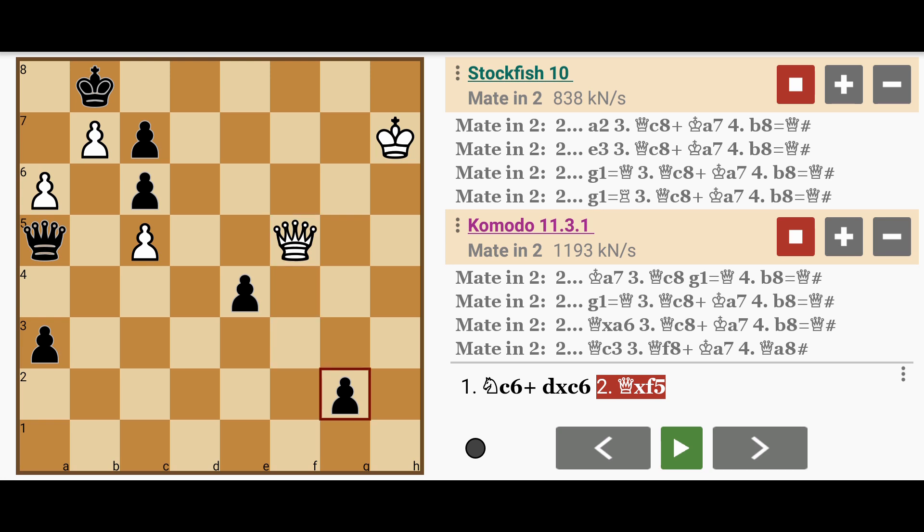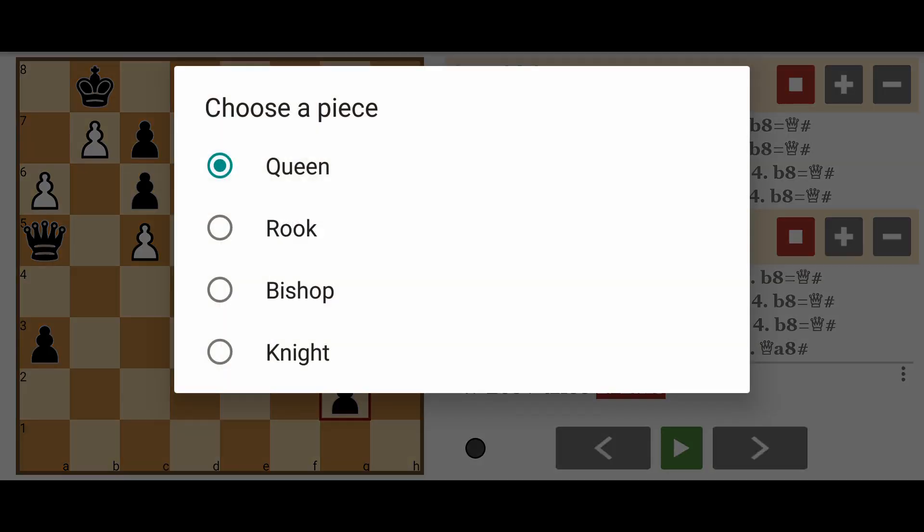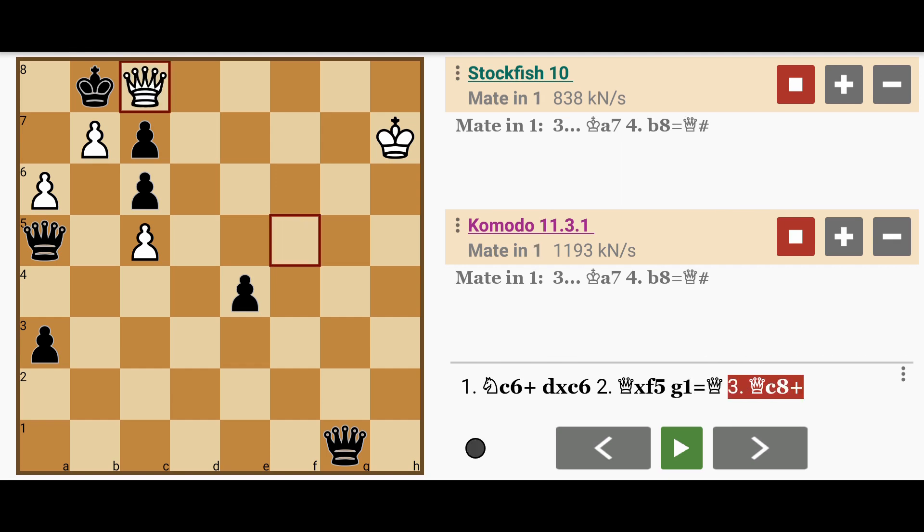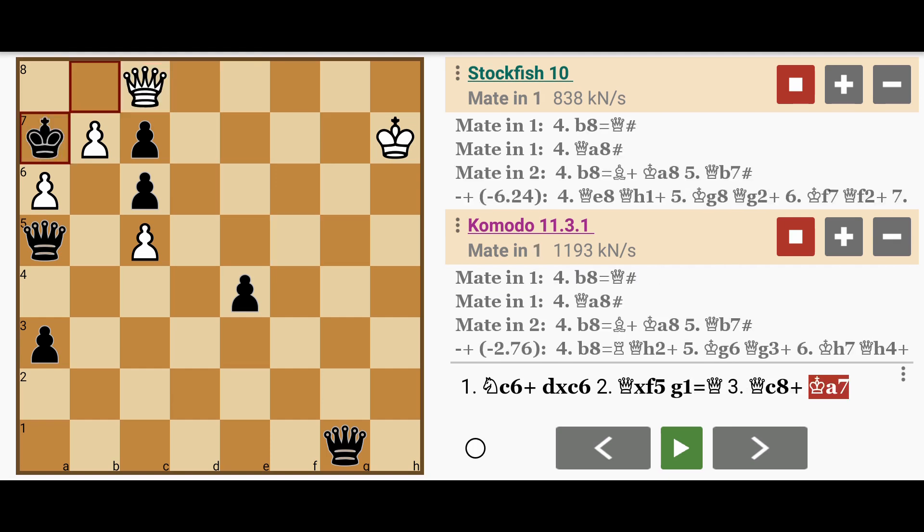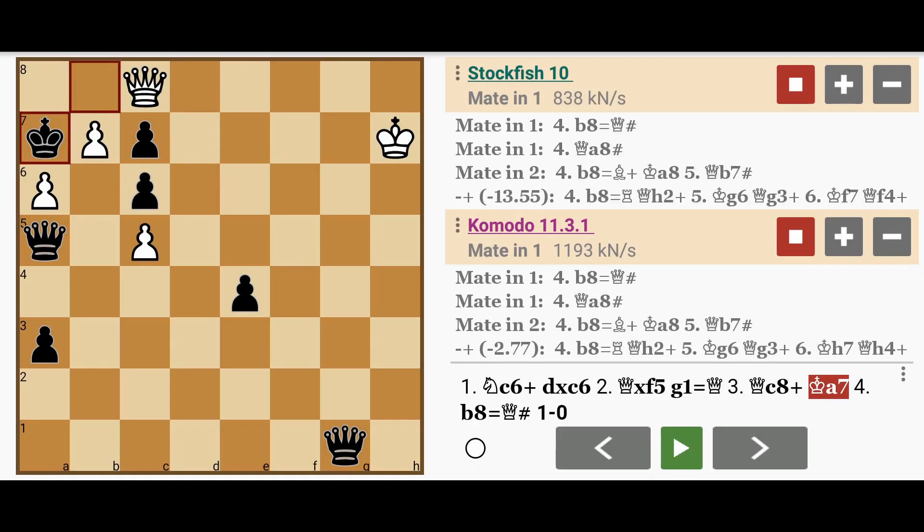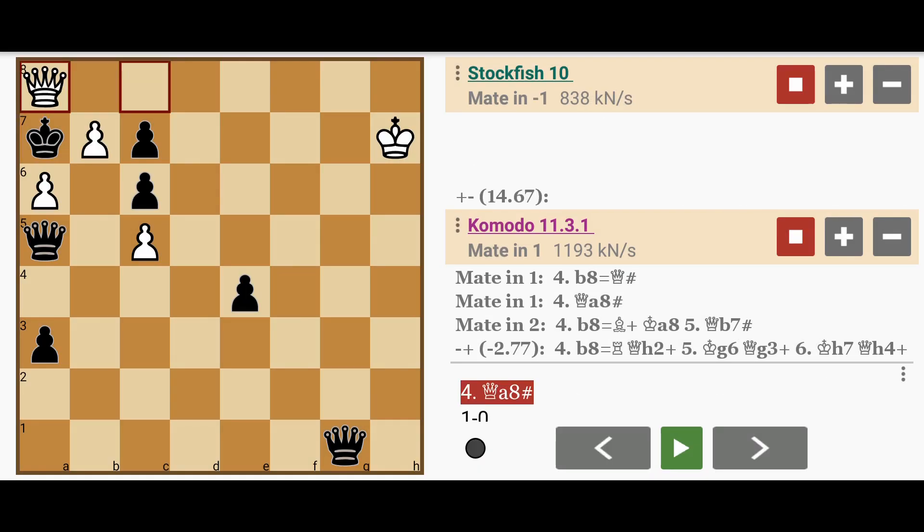Black might play g1 queen because there isn't much else to do. White proceeds with queen to c8 check, king to a7, and then either b8 queen checkmate or simply queen to a8 checkmate.